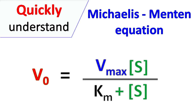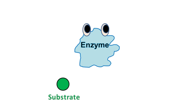Hey guys, Quickback Chemistry Basics here. Let's talk about the Michaelis-Menten equation. When the enzyme acts on a substrate, the substrate gets converted into product, and the product is finally released.